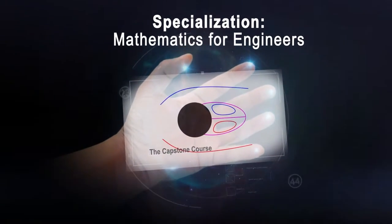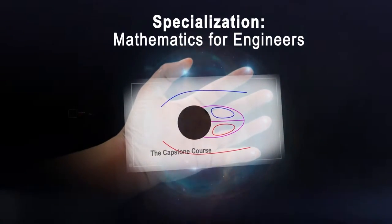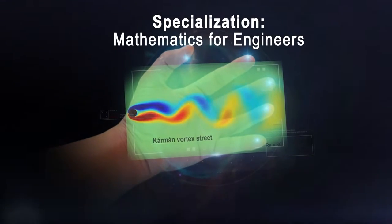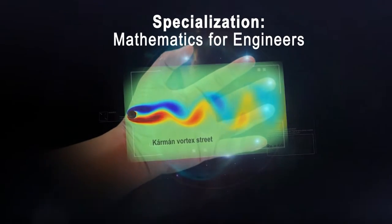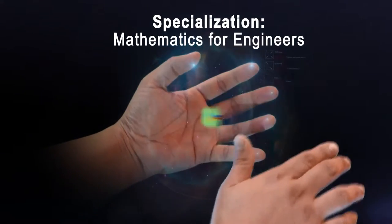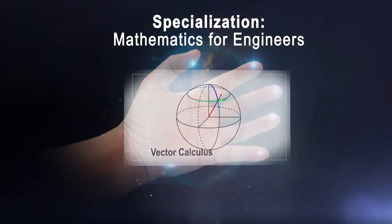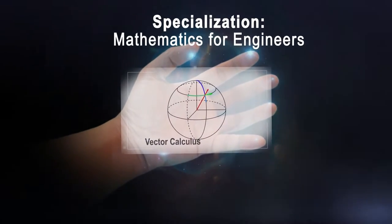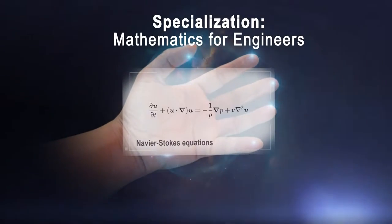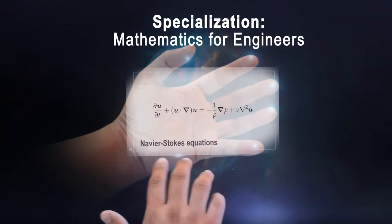In the capstone course of mathematics for engineers, you'll compute the fluid flow around the cylinder. You'll need vector calculus to understand and manipulate the Navier-Stokes equations.